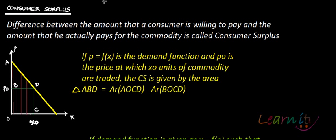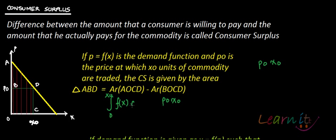From consuming these many units of commodity, how much is he actually paying? He is paying just the rectangle P naught, D, C, O — because in order to consume X naught he is paying just P naught. So the total expenditure is P naught times X naught. But actually he is getting this much utility from consuming this — that is, the entire area A, D, C, O is the total value the consumer is receiving.